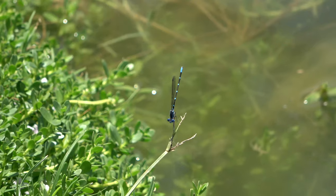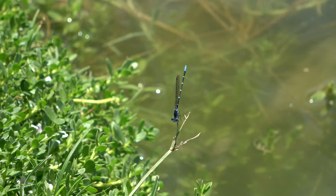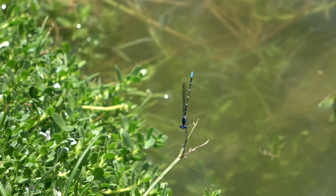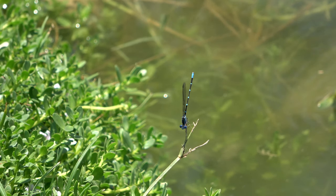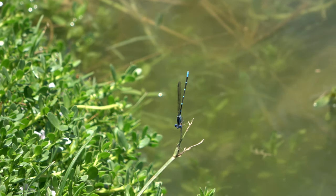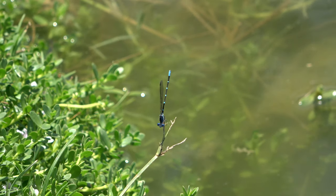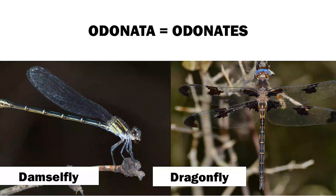Along the bank of a pond, you see something similar but smaller, and you wonder if these two insects are the same or related somehow. This insect is a damselfly. Both dragonflies and damselflies are in the same order Odonata, and are sometimes referred to as odonates.